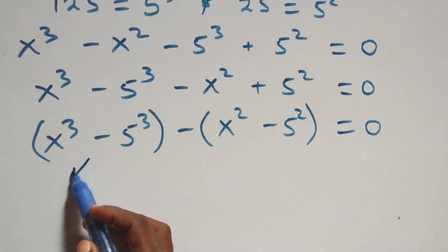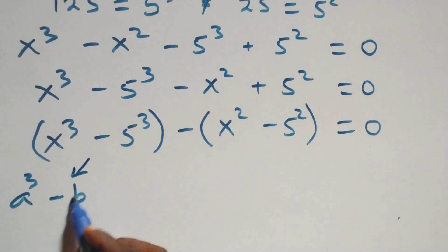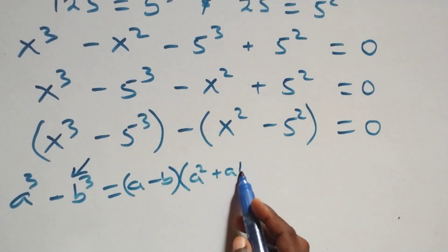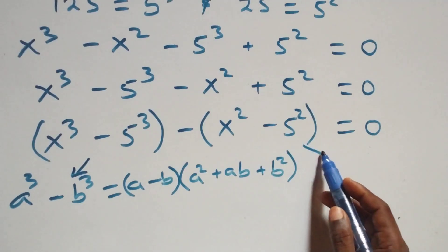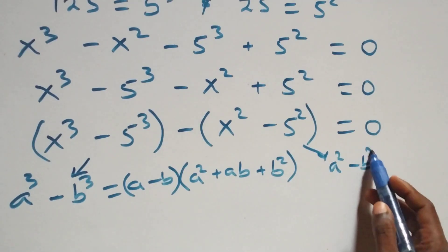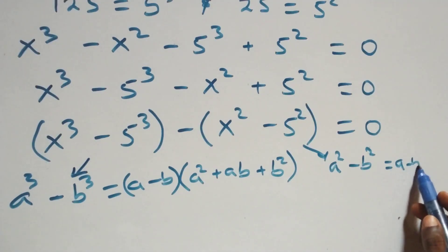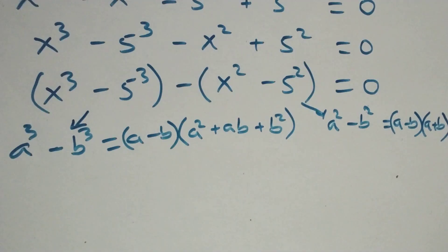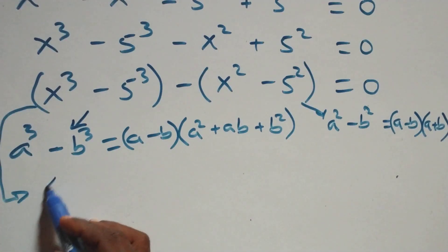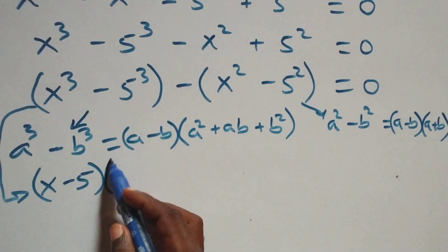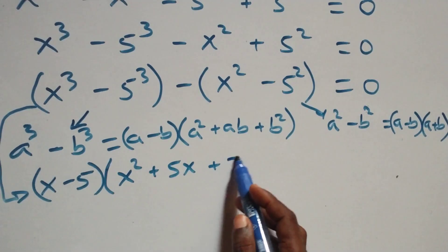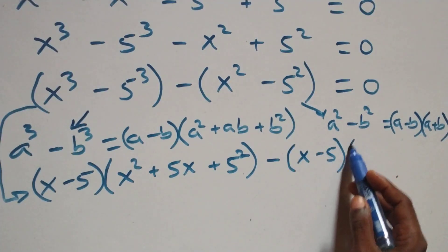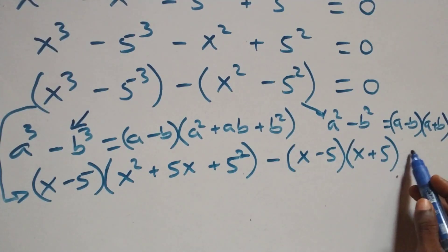The first bracket follows the identity a³ - b³ = (a - b)(a² + ab + b²), and the second bracket follows a² - b² = (a - b)(a + b). Applying these, we get (x - 5)(x² + 5x + 25) minus (x - 5)(x + 5) equals to 0.